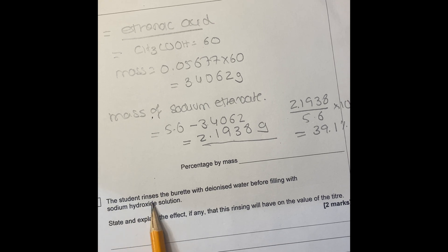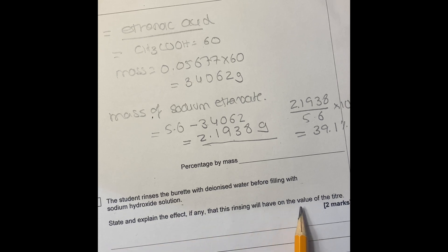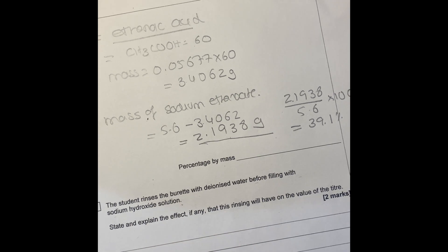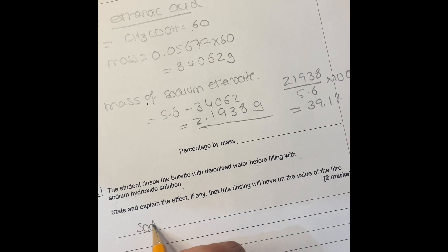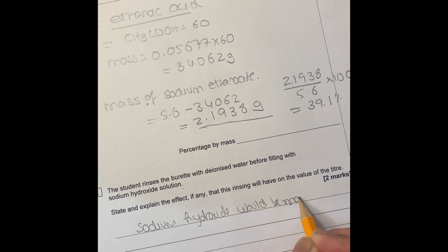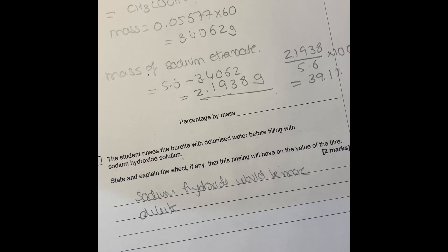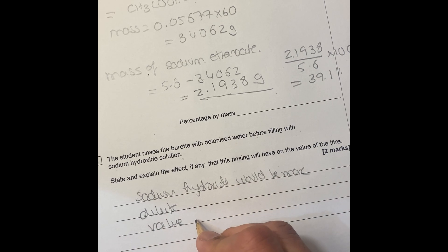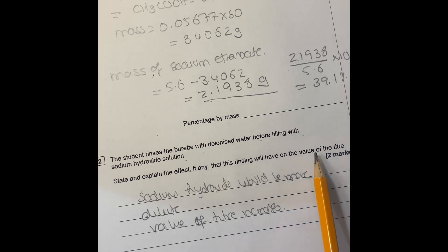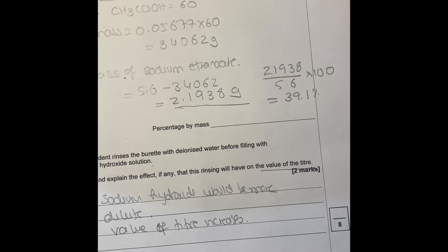To finish off: the student rinses the burette with deionised water before filling it with sodium ethanoate solution. The issue is that if you put water in your burette, you dilute your solution. The sodium hydroxide will be more dilute because water is present. Therefore the value of the titre would increase — you'd get a higher titre value. That's how you answer that part of the question.